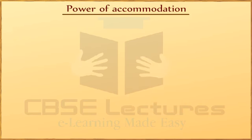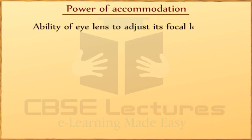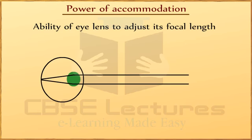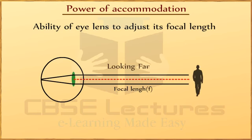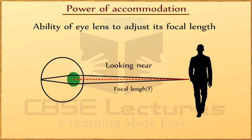Power of Accommodation. A normal human eye can see nearby and far-away objects as the eyes can focus the image in both cases. This ability of the eye lens to adjust its focal length is called the power of accommodation. When we see a distant object, the focal length of the lens is increased as the lens becomes thin and our eyes are more relaxed. But when we see nearby objects, the focal length of the eye lens is decreased and the lens becomes thick.